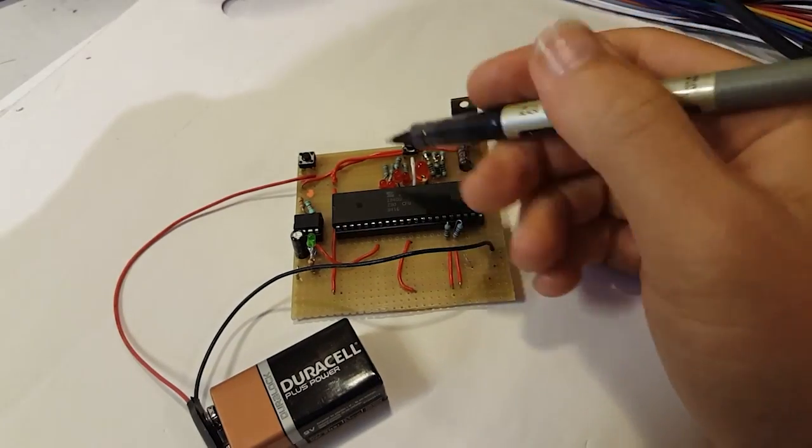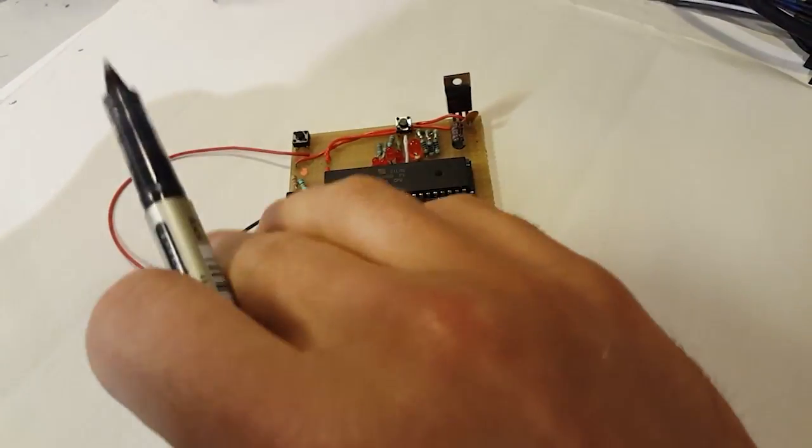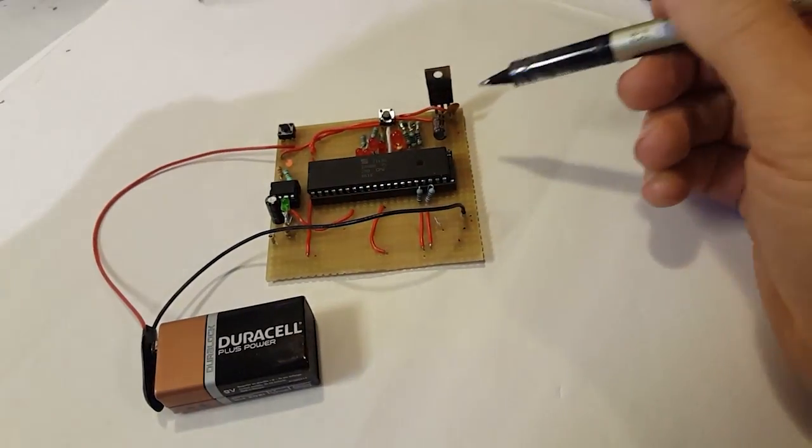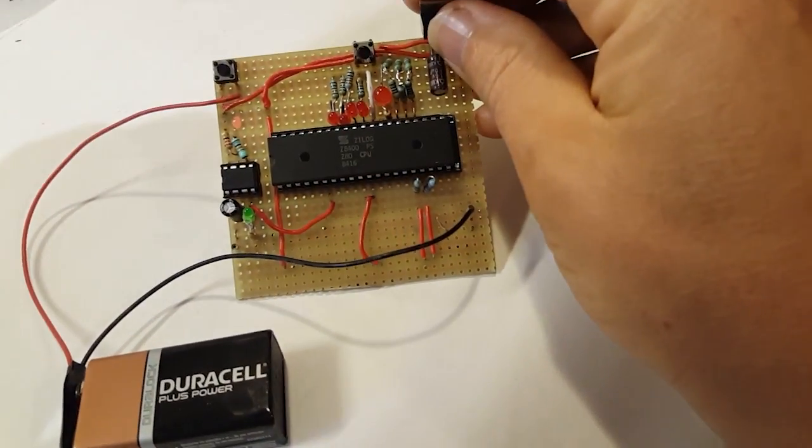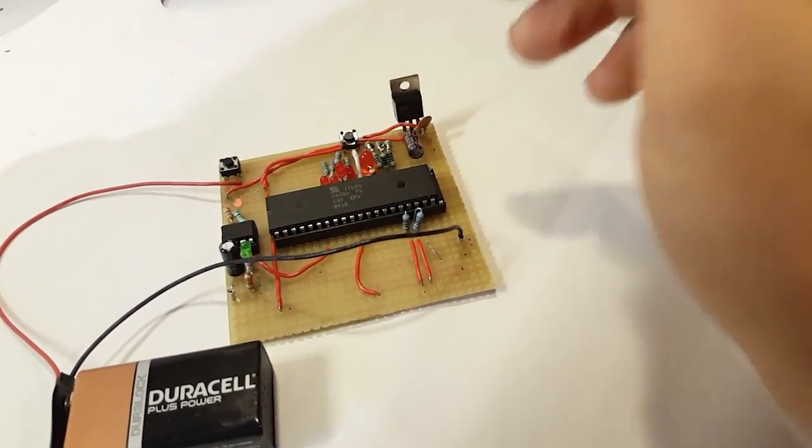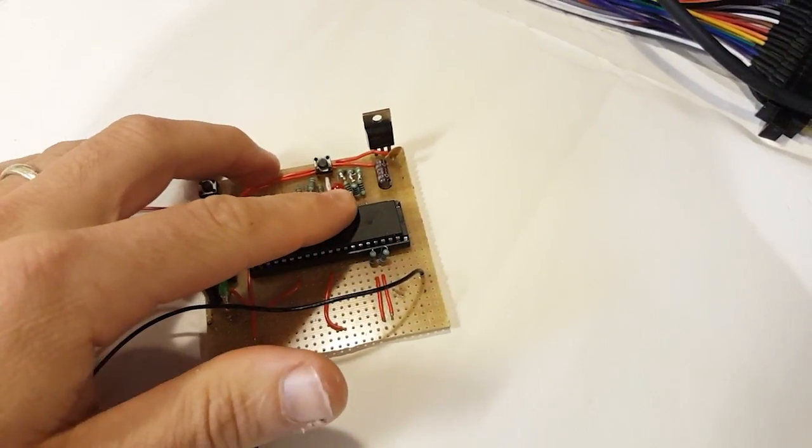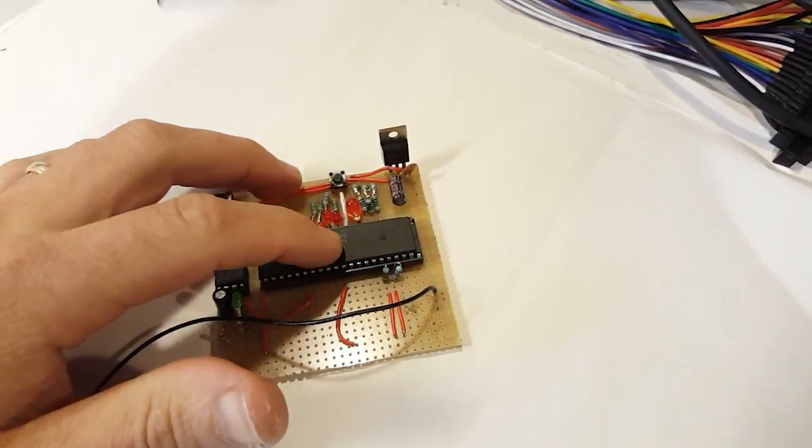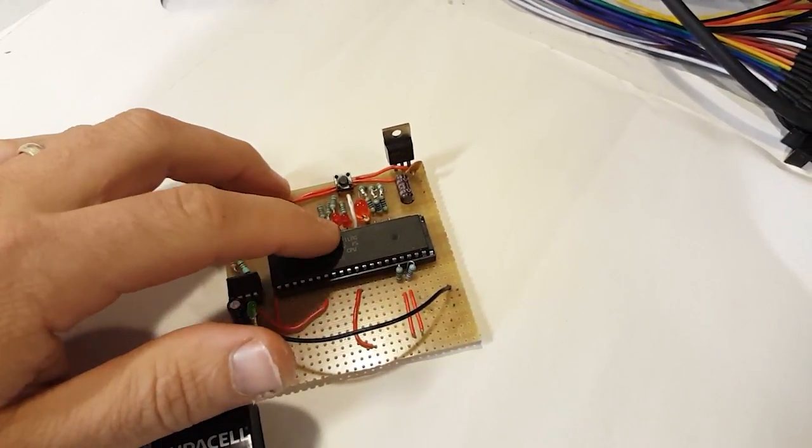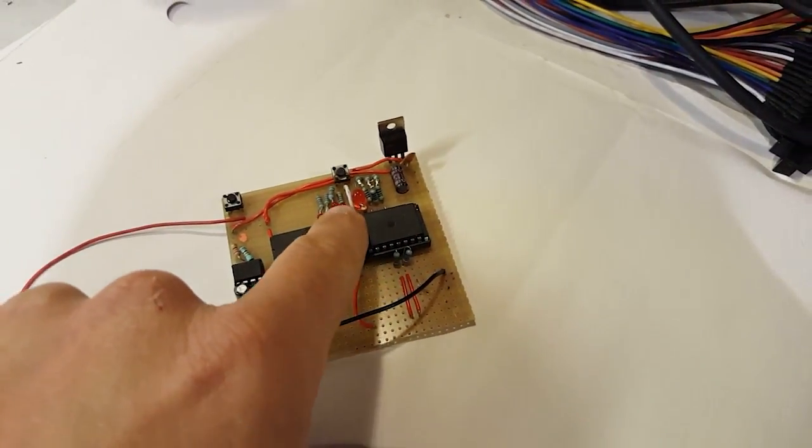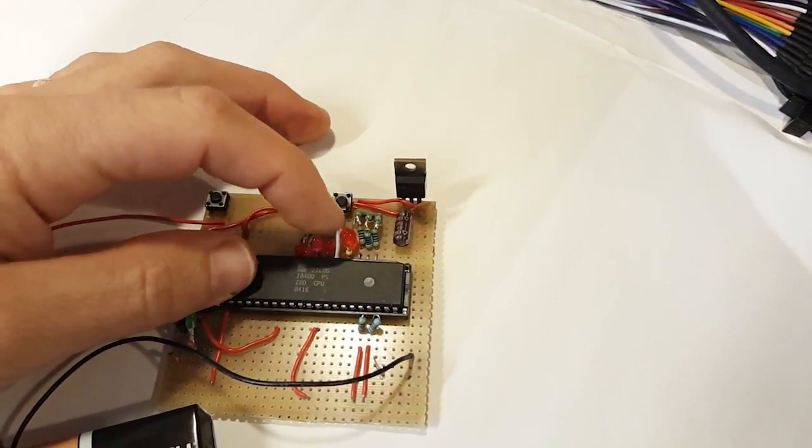It doesn't look like much, but this is a computer. We have a Z80 here, powered by a 9-volt battery that's converted to 5 volts. I'm using a 555 timer to provide a very slow clock so the computer will power on. I have the M1 line here just to indicate that the cycle is happening.